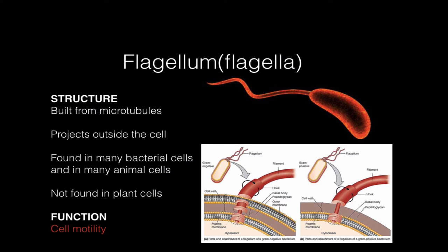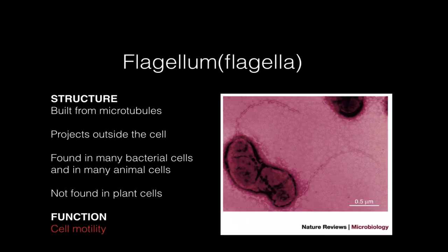Flagella are not found in plant cells, but they're found in many animal cells and bacterial cells. Here's a picture of some type of microorganism. You can see that it has two flagella, one attached to each end, so it's unclear in which direction this cell can swim. But it definitely uses its flagella for motility.